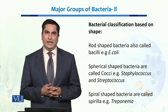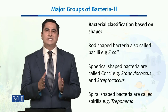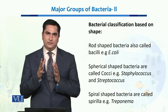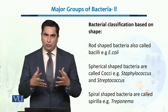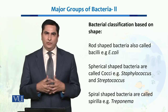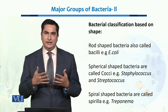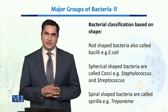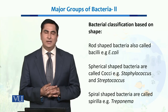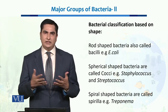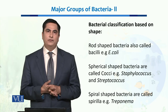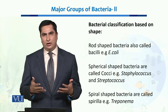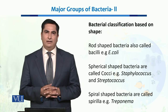When we talk about spherical-shaped bacteria, they are called cocci, or coccus. Coccus is the singular and cocci is the plural for round bacteria. Examples of cocci include staphylococci and streptococci. Staphylococci are bacteria which are present on the skin of humans.